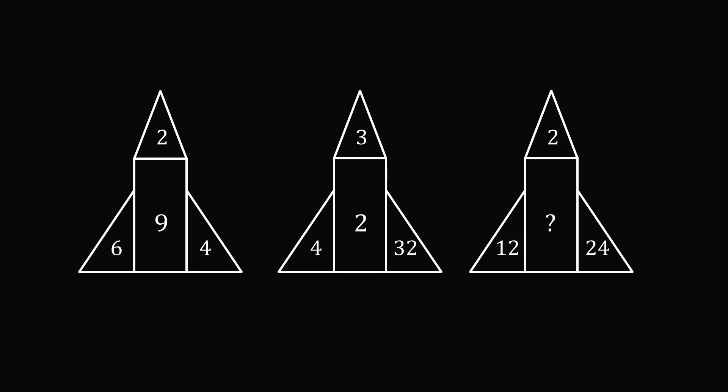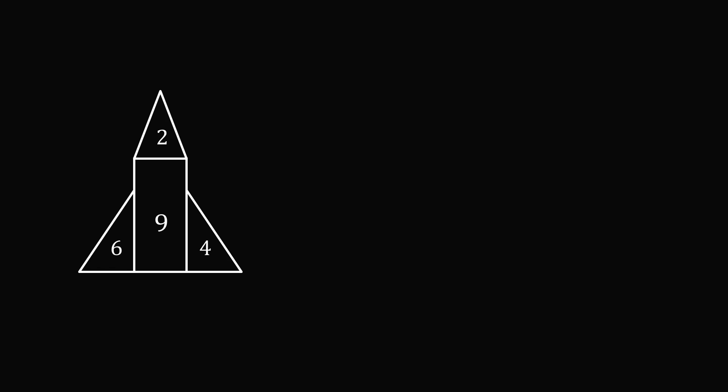So let's try to find the pattern in each of these rocket ships. Let's just start out with the first one. Now let's just take a look at the numbers. 2, 4, and 6 are even numbers, and 9 is an odd number.